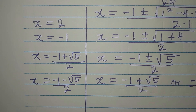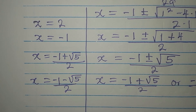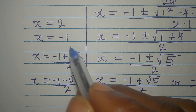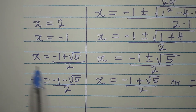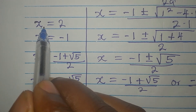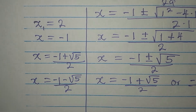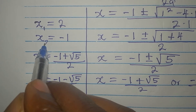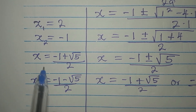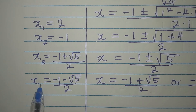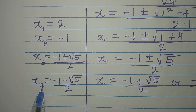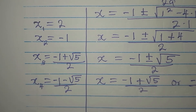Now I think we've solved everything. Let's bring the four solutions together. These are the four solutions — we can call them x1, x2, x3, and x4. Thank you for watching.